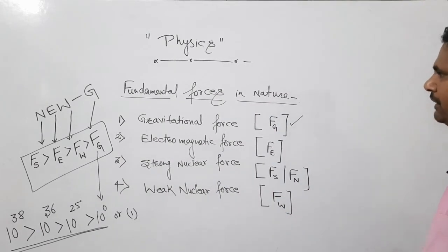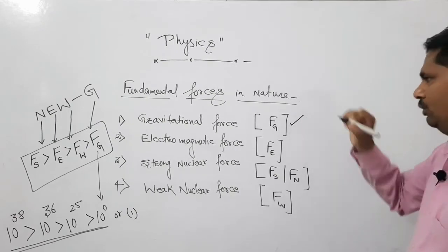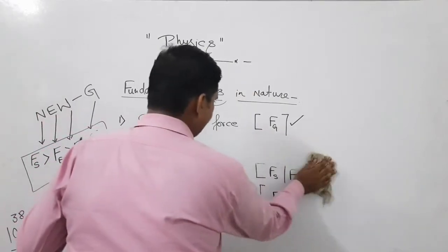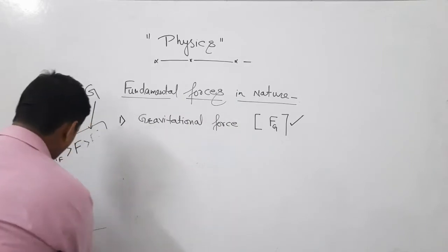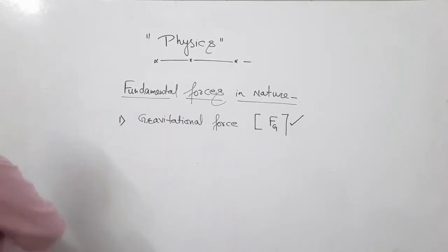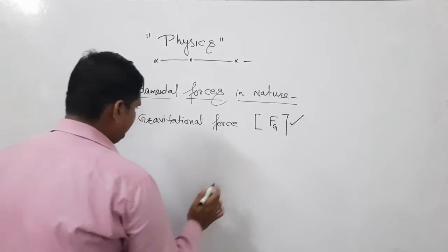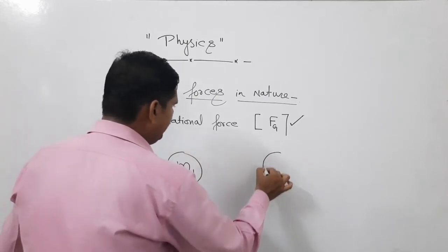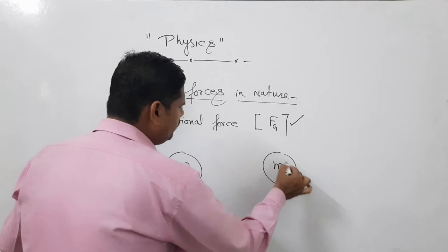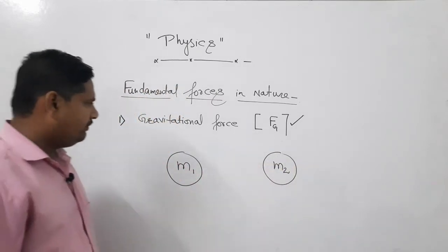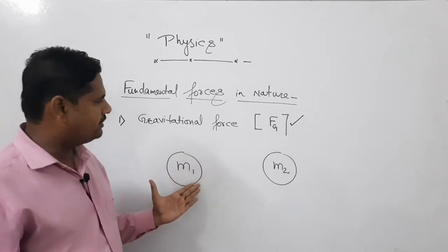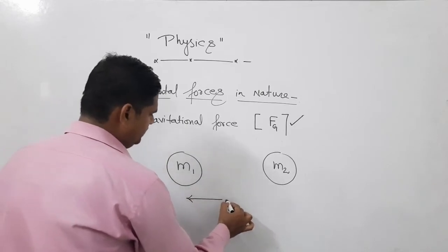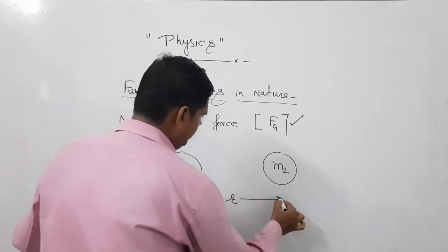Today what we have to discuss is about gravitational force. The name itself tells you - gravitational. Let me discuss this. Let I have two bodies of mass M1 and of mass M2. I have two objects. Mass of first one is M1 and of second one is M2. And distance between both is R.